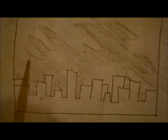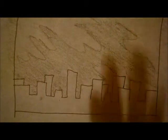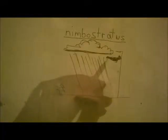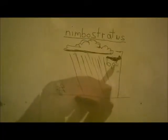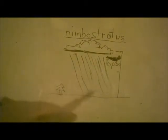Stratocumulus also forms in the same area of the sky at 6,000 feet or below. Formed when air is rising, you can often see some blue sky. Nimbostratus also forms at 6,000 feet and below, forming in a more stable atmosphere where warm air overruns colder air, producing light, steady precipitation.